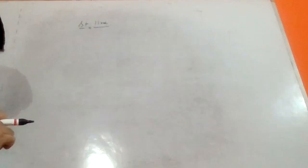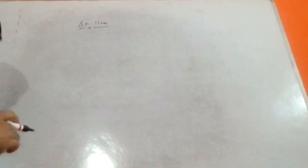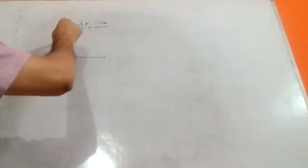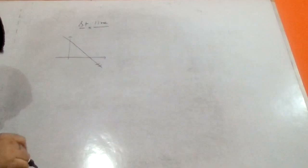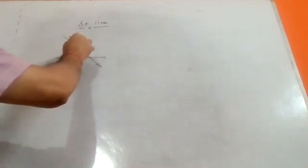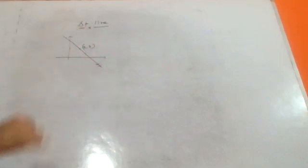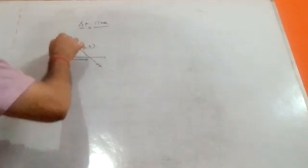Now I have a question: you have to find the equation of the line which cuts equal intercepts on the axes, meaning equal intercepts on both axes, and passes through the point two comma three.